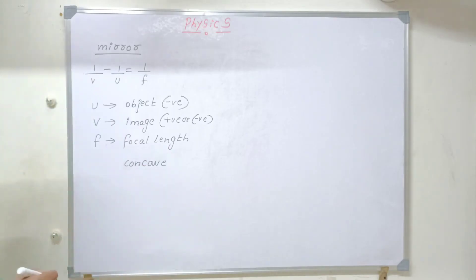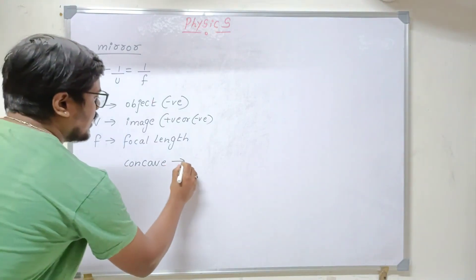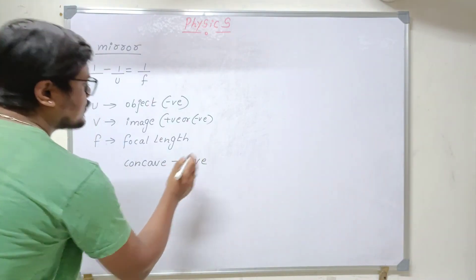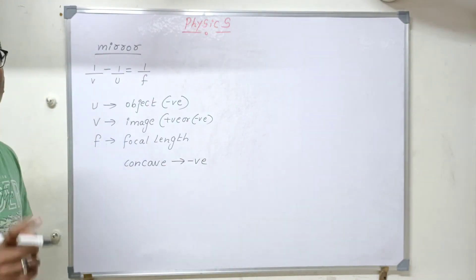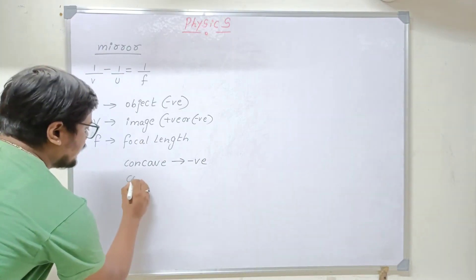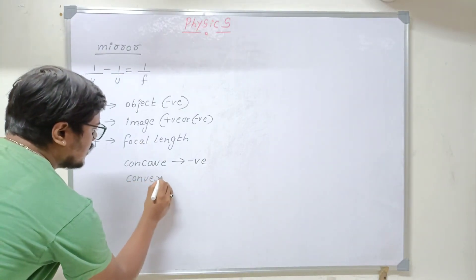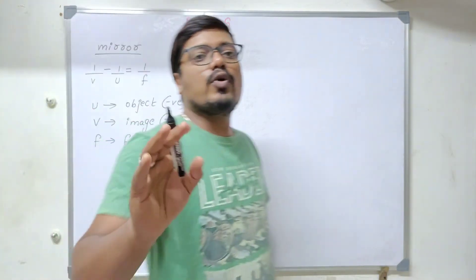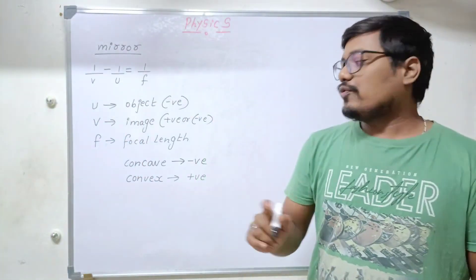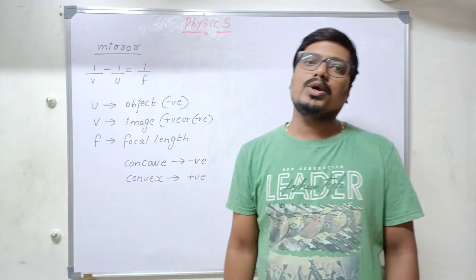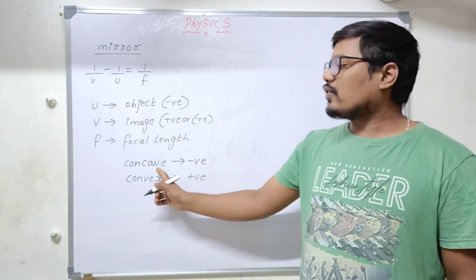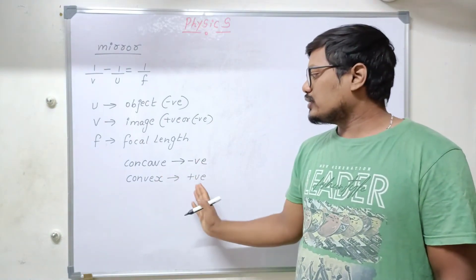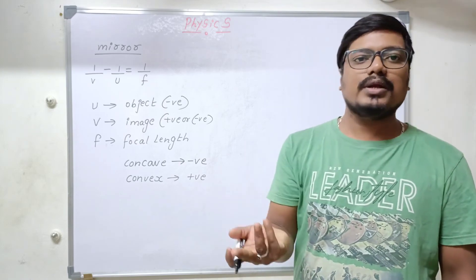If they give concave mirror, the focal length is negative. What do you have to consider the focal length as? Negative. If they give convex mirror, it is positive. They will just mention in the question focal length is 15 cm. So when to take positive, when to take negative I have written. Negative you should take for concave, positive you should take for convex. It can be a mirror or a lens.